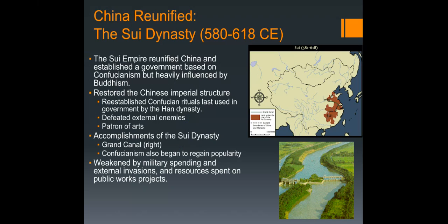The Sui dynasty was very short-lived, and we'll talk about why. It manages to unify these kingdoms, but as you can see it is considerably smaller than the Han was — tiny compared to modern-day China, to be blunt. China was reunified under the Sui in 589.